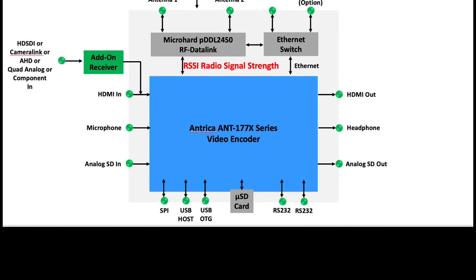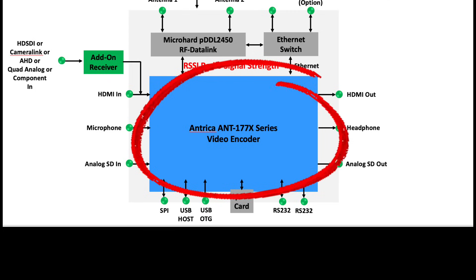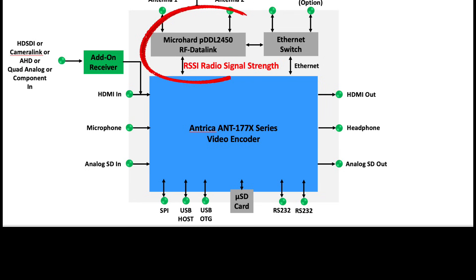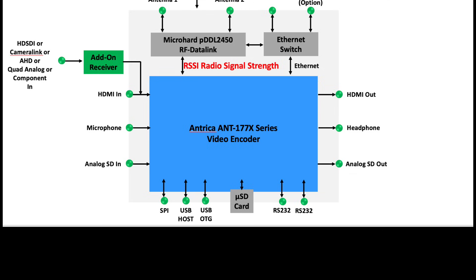Here you can see the block diagram of one of our encoders — this is a generic encoder, could be any of the 177 series. In the blue box is the encoder with its various inputs and outputs, and just above that we have the micro hard radio link, the PDDL2450. In red you can see there is a connection between our device and the micro hard, which is the radio signal strength indicator. This is an input which allows the encoder to adaptively adjust the parameters of the stream depending on what the radio signal strength is.